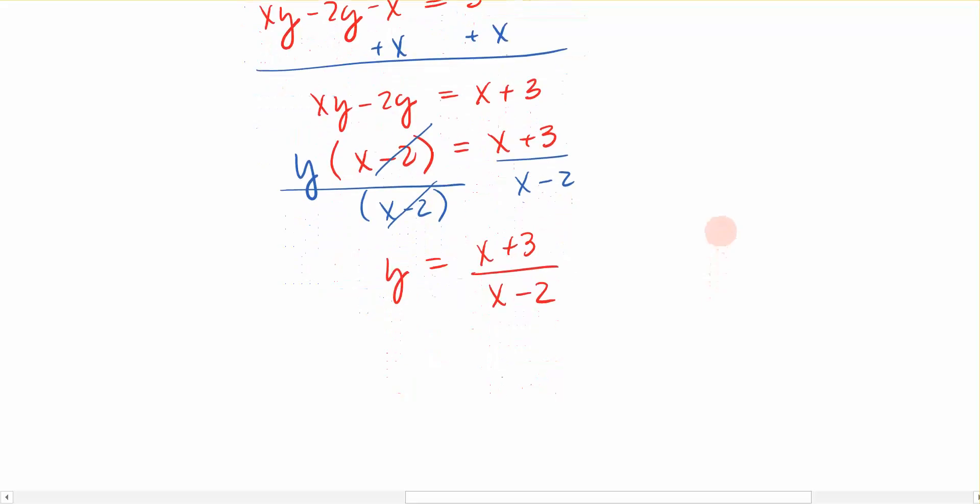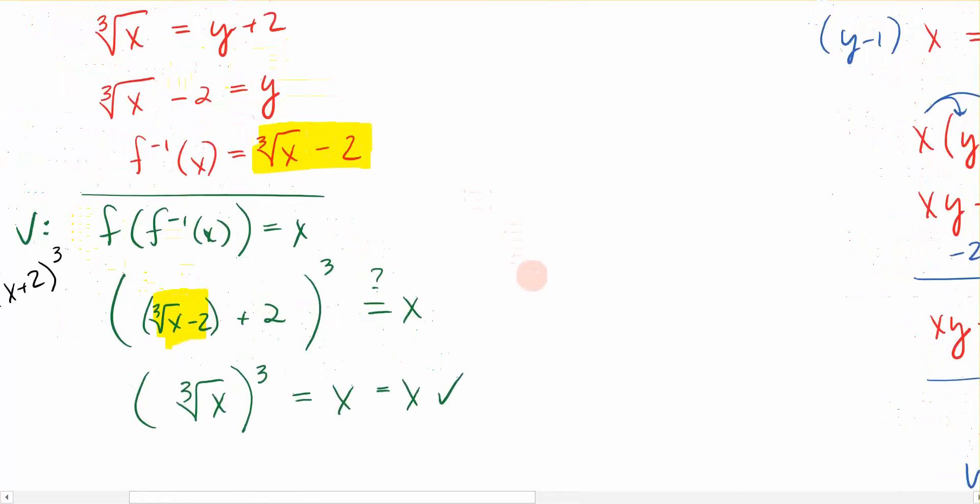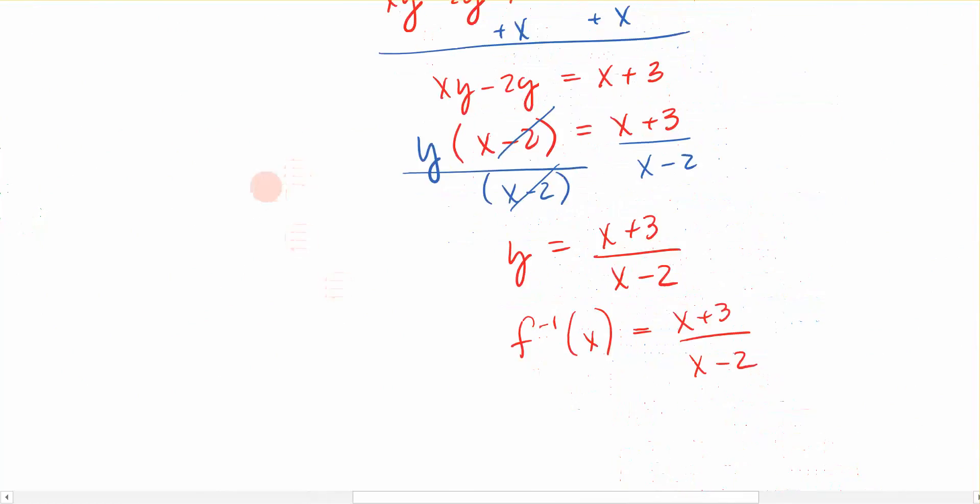We would finish by simply rewriting it in its function notation. So f inverse of x would be equal to x plus 3 over x minus 2. Now if you get to this point, you can check it by doing the check like we did over here on this previous example, but this is the solution.